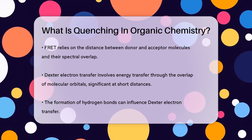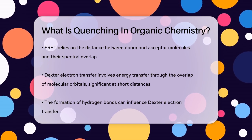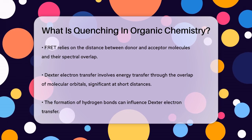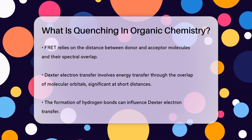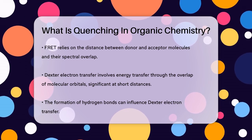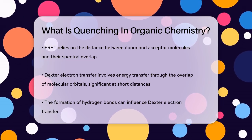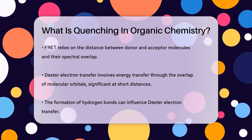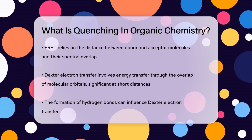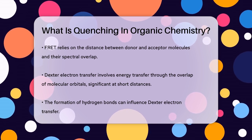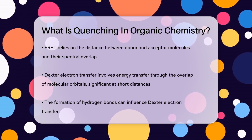Dexter electron transfer is another mechanism where energy is transferred through the overlap of molecular orbitals. This is more significant at short distances and can be influenced by the formation of hydrogen bonds between the molecules and the solvent.